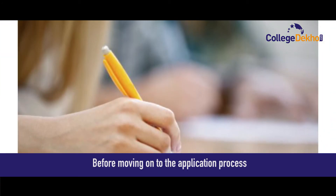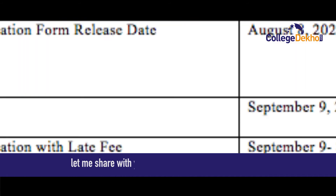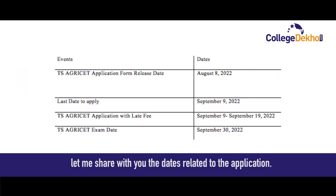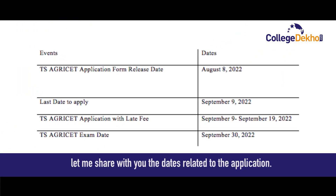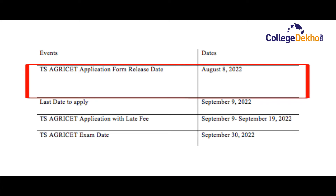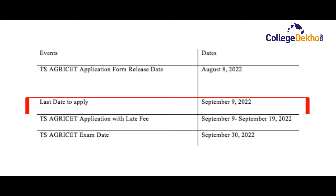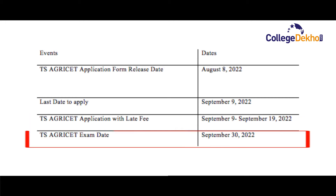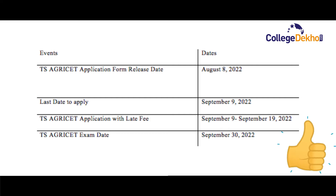Before moving on to the application process, let me share with you the dates related to the application. TAS Agriset application form release date: August 8, 2022. Last date to apply: September 9, 2022. TAS Agriset application with late fee: September 9 to September 19, 2022. TAS Agriset exam date: September 30, 2022. Save the dates.